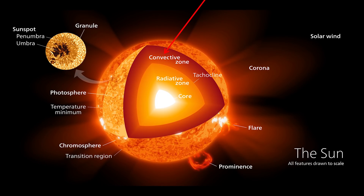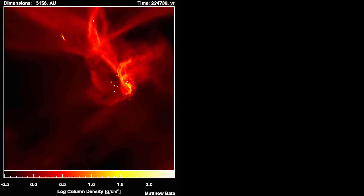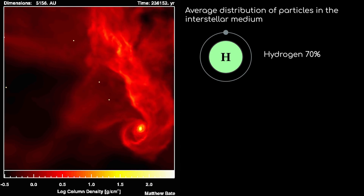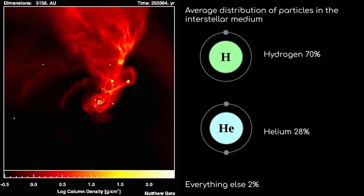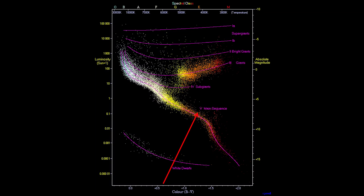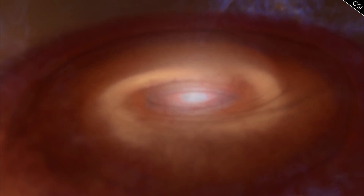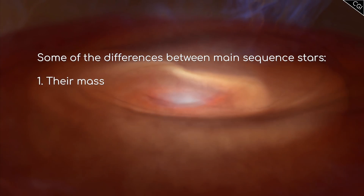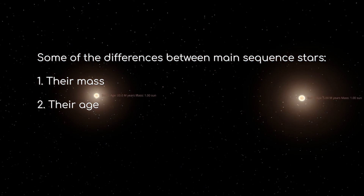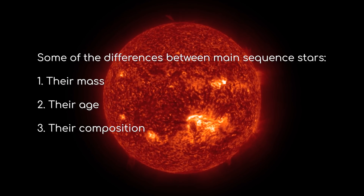Variable stars exist along this strip because at this mass, the internal structure of the star is more prone to instability due to the ionisation of helium in the star's convective zone. Another variable for main-sequence stars is what material was actually fed into them during the protostar phase. The majority of the interstellar medium is hydrogen, but there are other atoms like helium, oxygen, and even metals like iron and gold. In stellar structure, 'metals' means anything above an atomic number of 2. Stars with an abundance of metals will be redder on the spectrum, while metal-poor stars will be bluer.